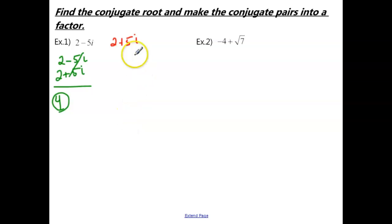Then, we want to foil our two pairs. So we have 2 minus 5i times 2 plus 5i. So when we foil this, we get 2 times 2 is 4, we get a positive 10i, a negative 10i, and then a negative 25i squared. So make sure you're multiplying carefully as you foil. Then, this middle term is going to cancel out, positive 10i minus 10i.